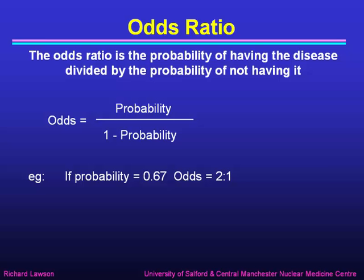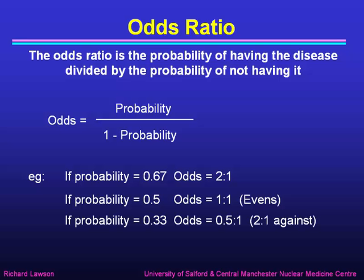For example, if scientifically we have a probability of 0.67, then the odds is 0.67 divided by 0.33, which is 2, or odds of 2 to 1. A probability of 0.5 gives odds of 0.5 over 0.5, which is 1 — 1 to 1, or evens. And a probability of 0.33 gives odds of 0.33 over 0.67, which is 0.5 to 1 — or, in betting terms, 2 to 1 against. Scientific probabilities can be translated into odds of something to 1, and it turns out that odds are going to be more useful to us in this case.